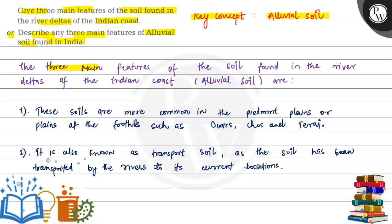The three main features of the soil found near the river deltas of the Indian coast — that is alluvial soil — are: first, these soils are more common in the piedmont plains or planes at the foothills, such as the douars, chores, or tarai. So, alluvial soil is most frequently found in plain areas such as the tarai region, chores, and douars.